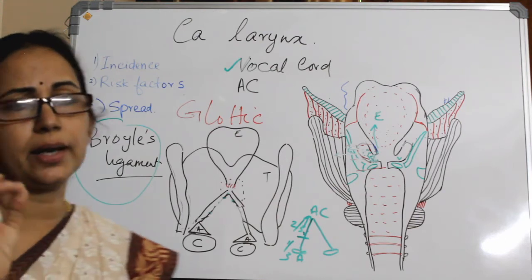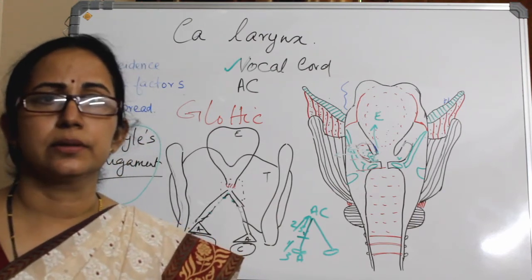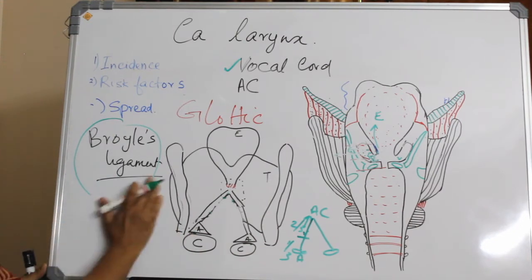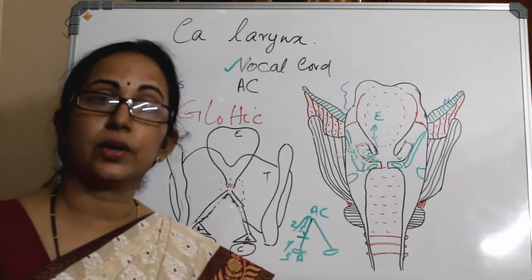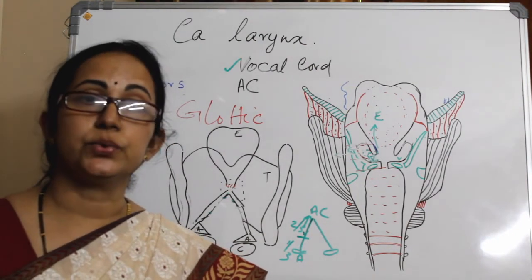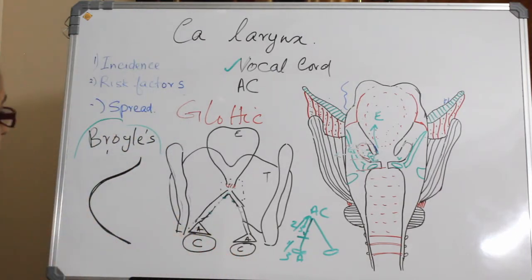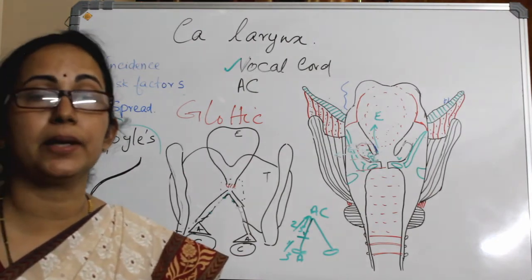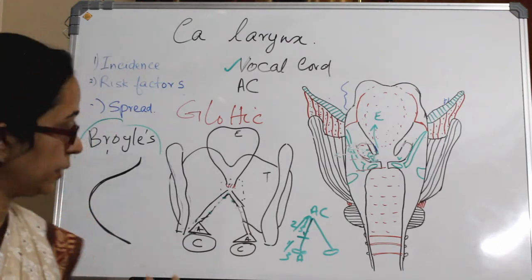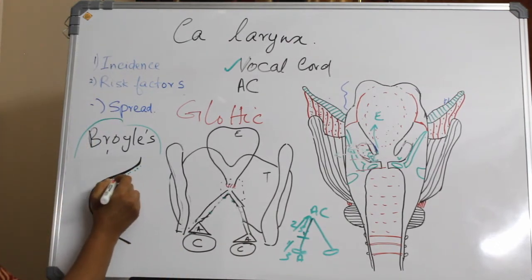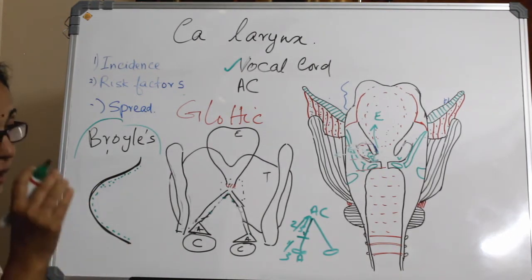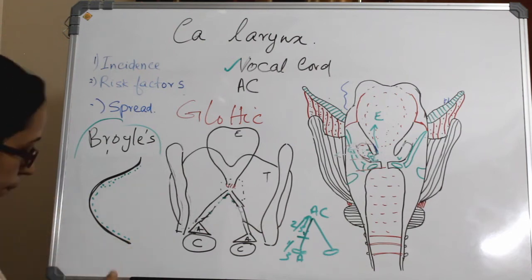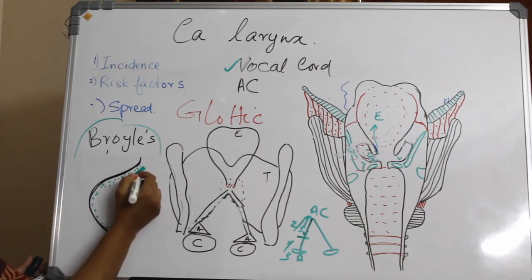What is the anatomy of the vocal cords? The vocal cords are divided into a stratified squamous epithelial layer, then the lamina propria, which is divided into a superficial, intermediate, and deep layer. The superficial layer of the lamina propria is called Reinke's space.